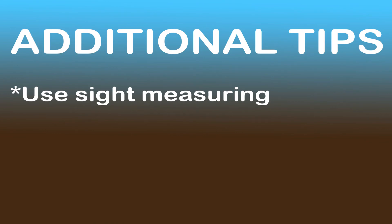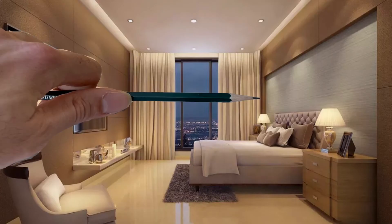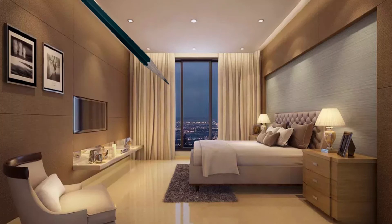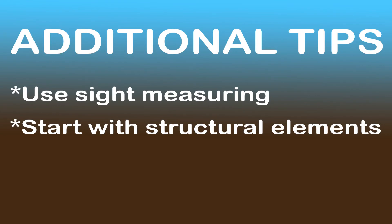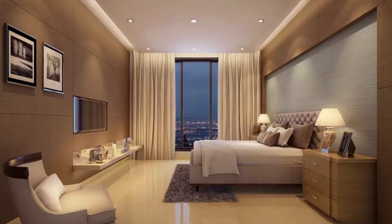When observing deeper space, like a room or a landscape, you can use the sight measuring technique to determine angles and proportions, just as you would for a still life drawing. When drawing an interior space, it's always best to start with the structural elements first. Try to draw the walls, floor, and ceiling before getting into the details of furniture and objects. Look for the X shape that commonly connects these sets of receding parallel lines.